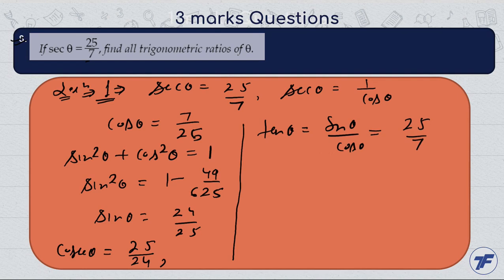So we have sin θ equals 24 by 25 and cos θ equals 7 by 25, so tan θ equals 24 by 7. This is the value of tan. And with the help of tan, we can find the value of cot. Cot will be the reciprocal of tan, which is 7 by 24.